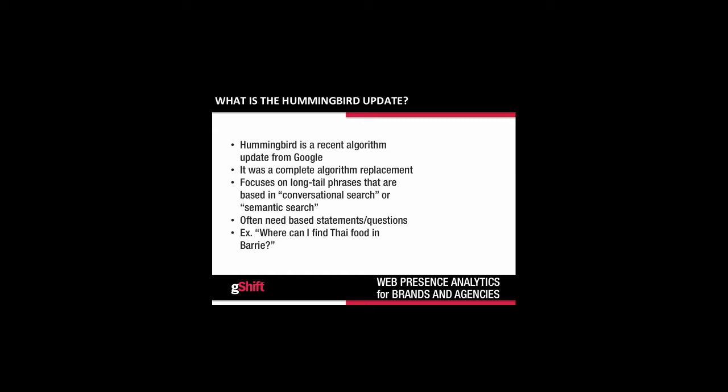Unlike previous updates such as Penguin or Panda, Hummingbird marks the first time that the leading search engine has made a complete overhaul of their algorithm in 12 years. This update focuses on long-tail phrases that are more natural and often need-based. Google referred to this as conversational search or semantic search. For instance, 'Where can I find Thai food in Barry?' is more specific to the full need of the searcher as opposed to simply searching 'Thai food Barry.'